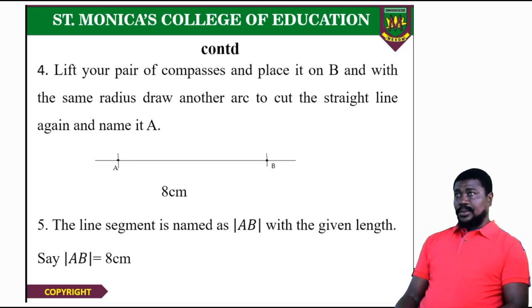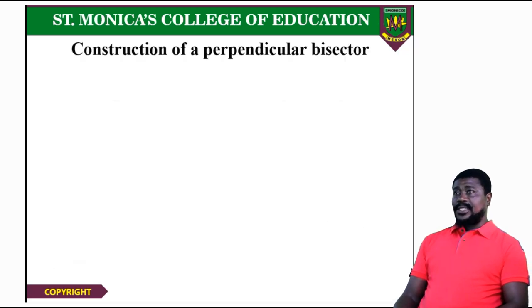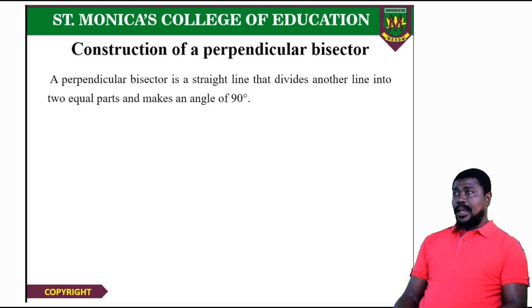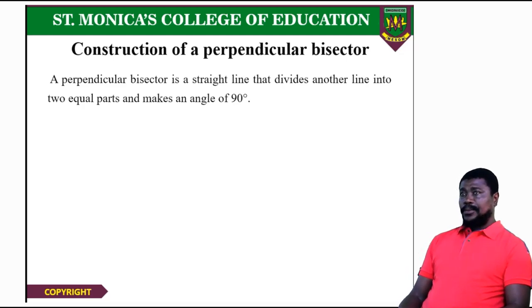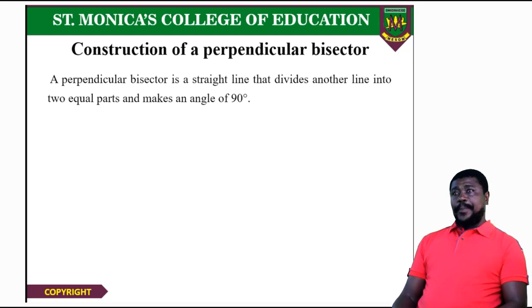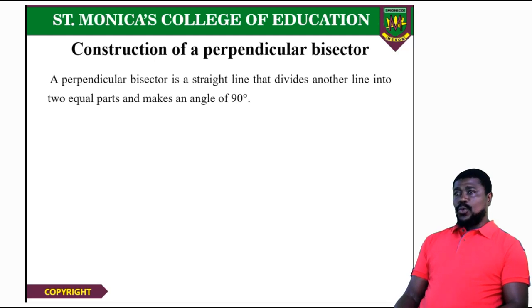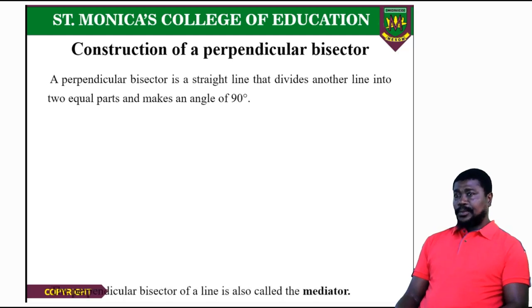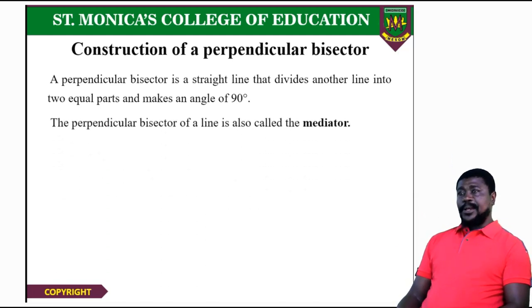We move on to the construction of a perpendicular bisector. A perpendicular bisector is a straight line that divides another line into two equal parts and makes an angle of 90 degrees. The perpendicular bisector of a line is also called the mediator.